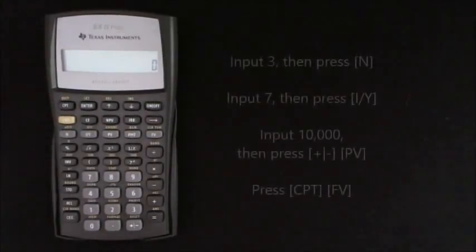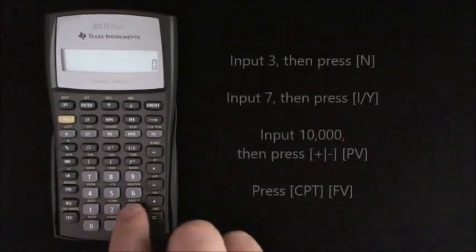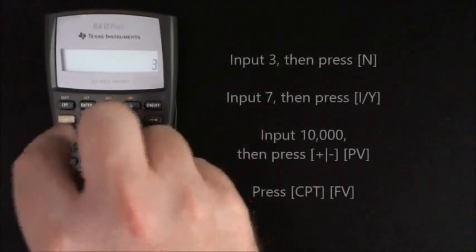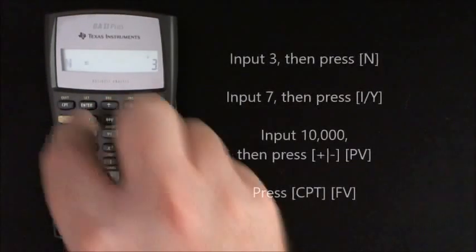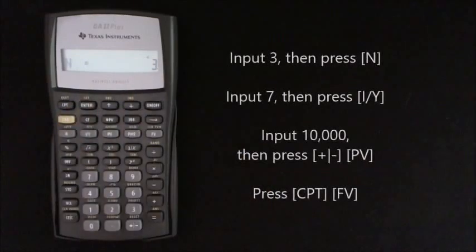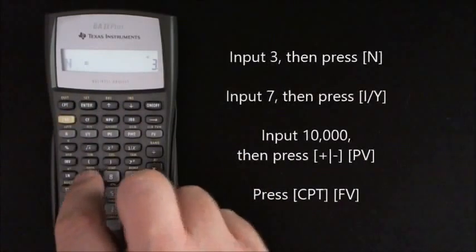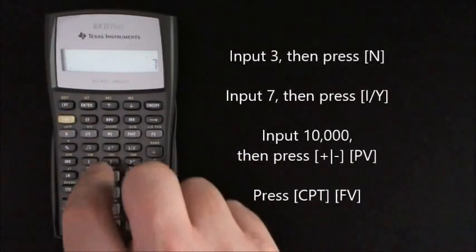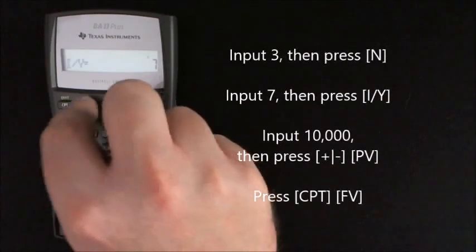Just make sure you go back and change the CY back to 1 so it doesn't mess up your future calculations. And then input 3, and press N, and enter, and then put 7 in the IY, and enter.